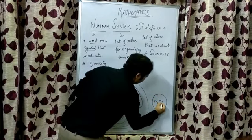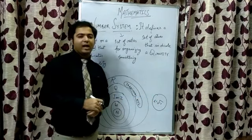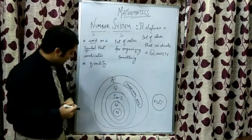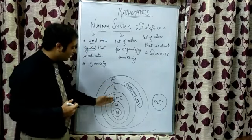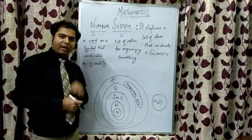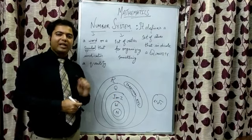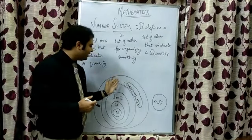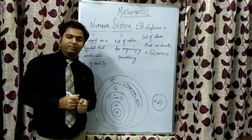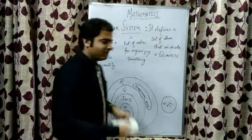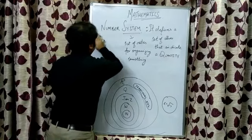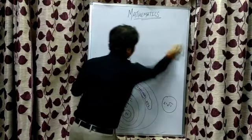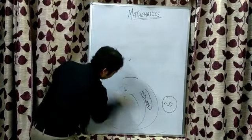Imaginary numbers have a value of under root minus 1, which we will be studying in class 11th and 12th. At your current level, we have to deal with rational numbers, integers, whole numbers, and natural numbers. In this chapter we primarily deal with whole numbers. All these numbers together constitute the number system.